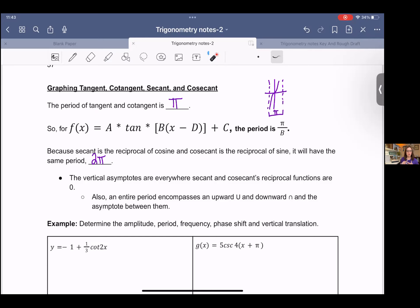So for all the other trig functions, cosecant, secant, sine, and cosine, they have a period of 2 pi. We just have to take into consideration these asymptotes here for tangent and cotangent.